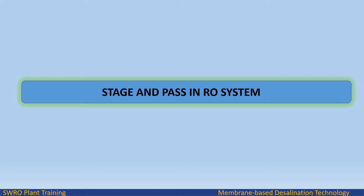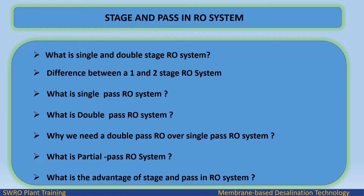The terms stage and pass are often wrongly confused as the same thing. It is important to understand the difference between a 1 and 2 stage RO and 1 and 2 pass RO. We will cover: what is single and double stage RO system, what is single pass RO system, what is double pass RO system, why we need a double pass RO over single pass RO, what is partial pass RO system, and what is the advantage of stage and pass in RO system.